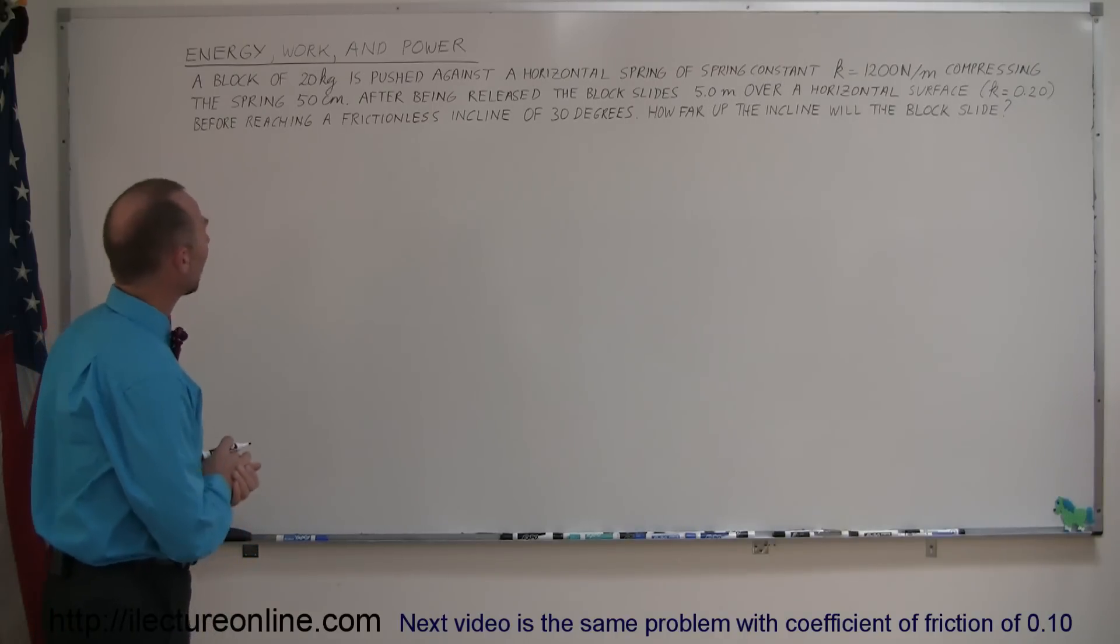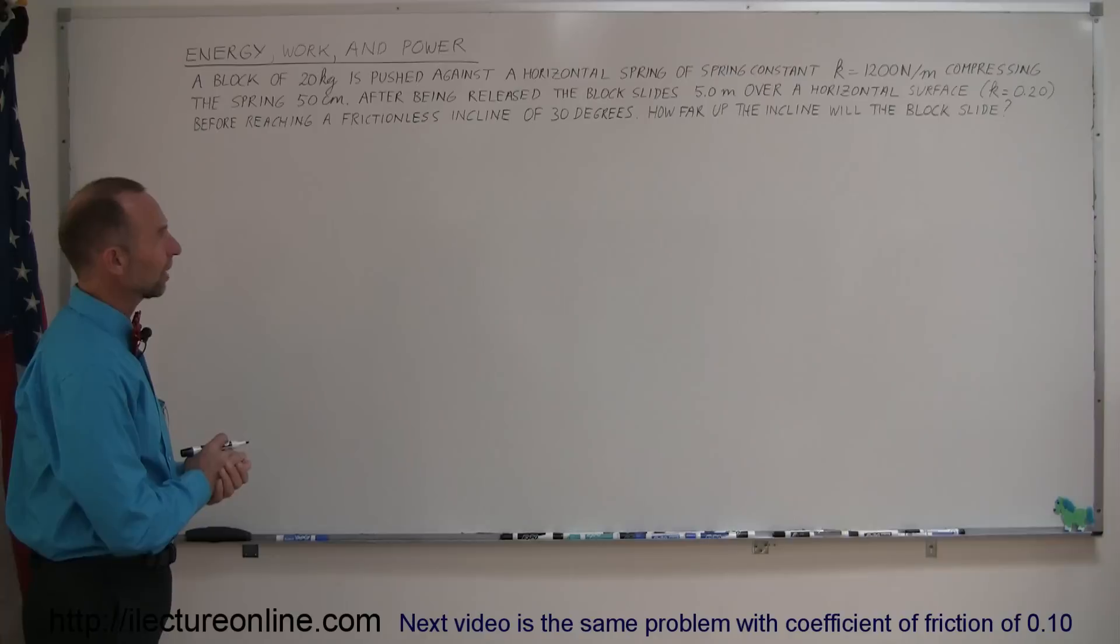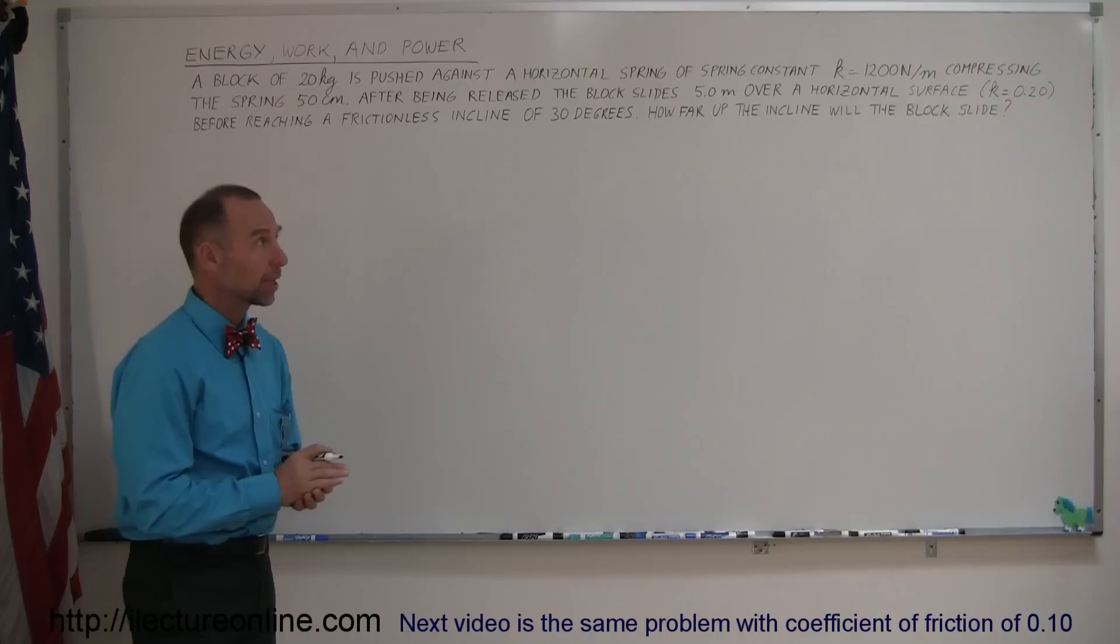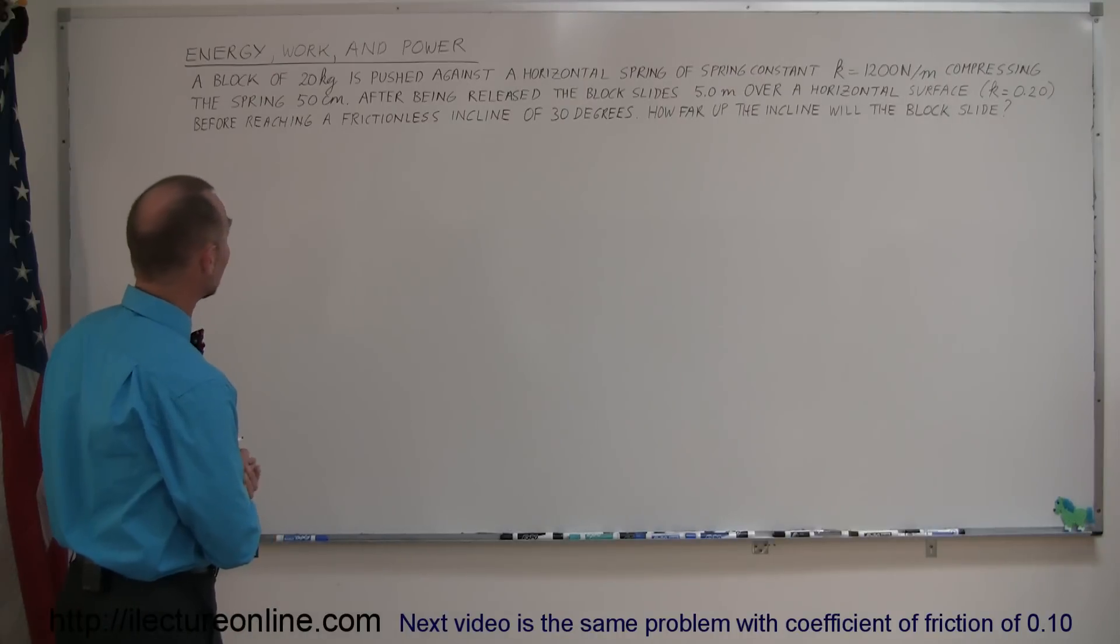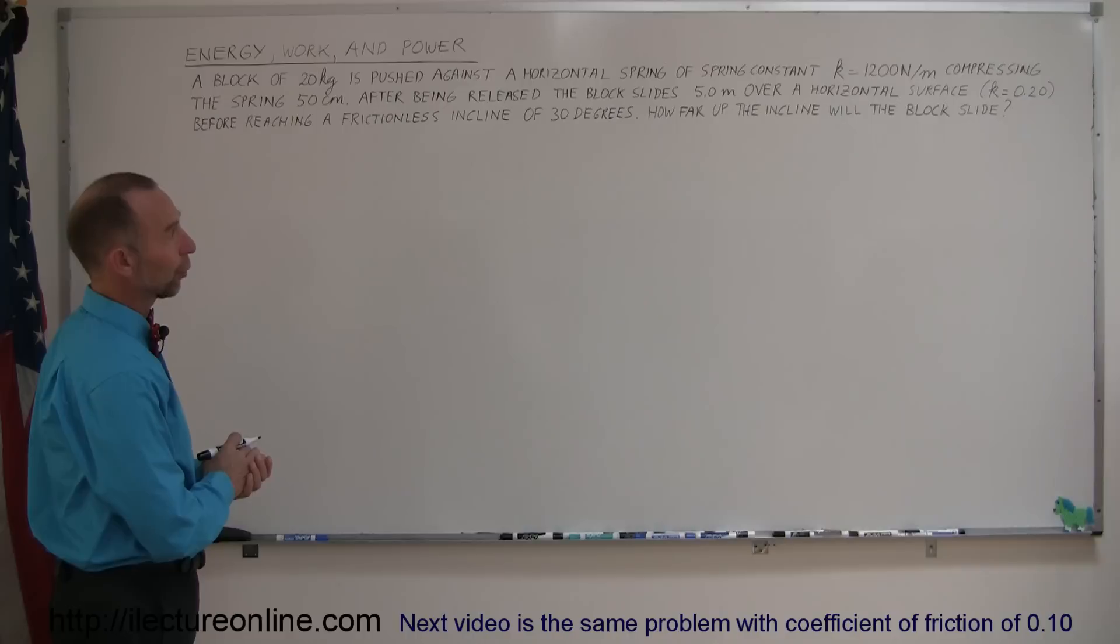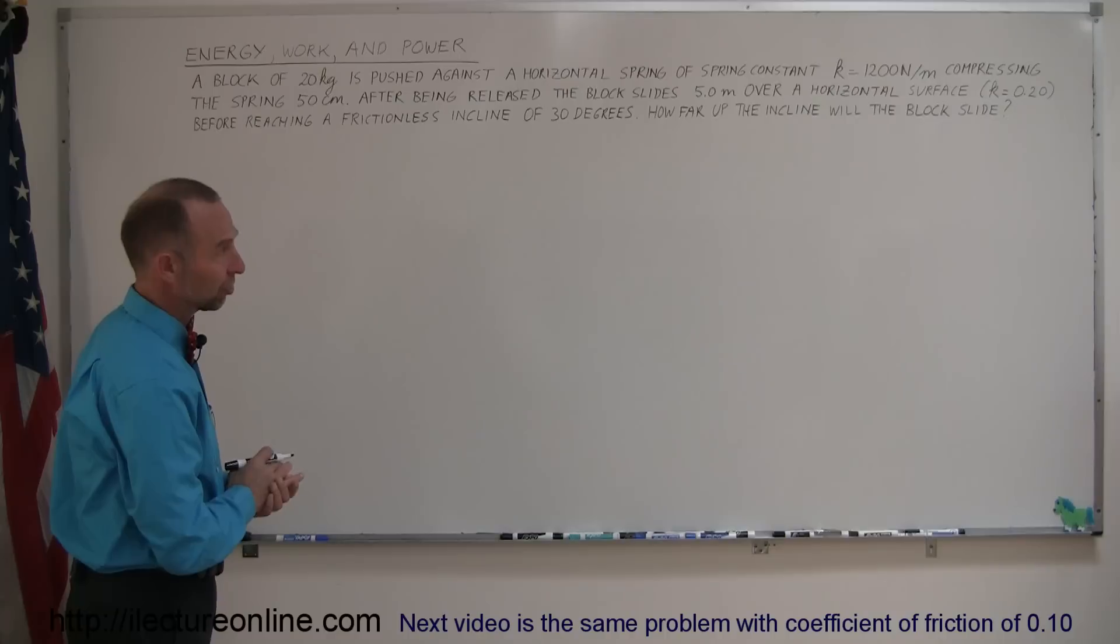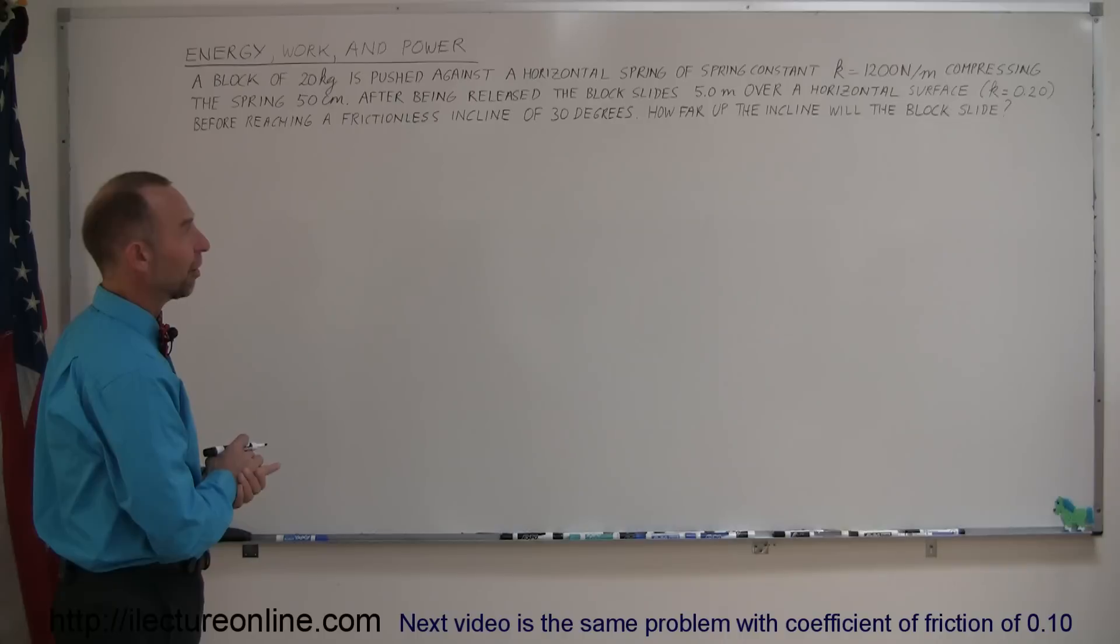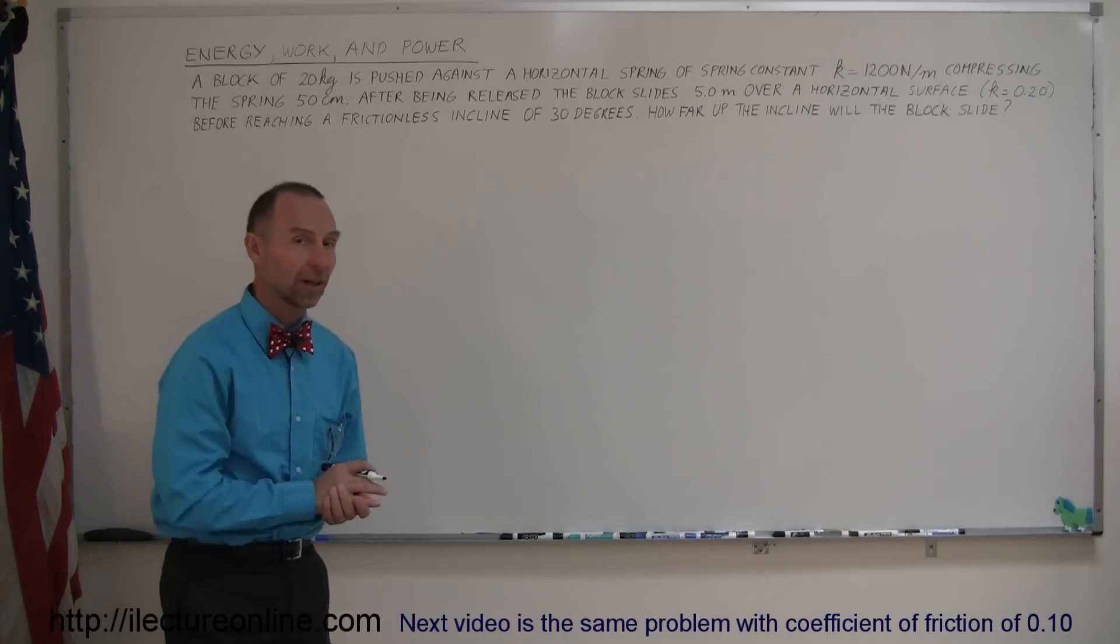A block of 20 kilograms is pushed against a horizontal spring of spring constant k equals 1,200 newtons per meter, compressing the spring 50 centimeters. After being released, the block slides 5 meters over horizontal surface with coefficient of friction k equals 0.2, before reaching a frictionless incline of 30 degrees. How far up the incline will the block slide?